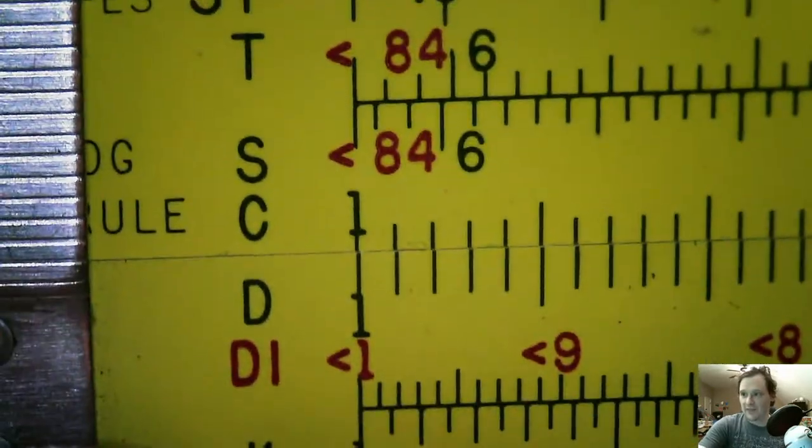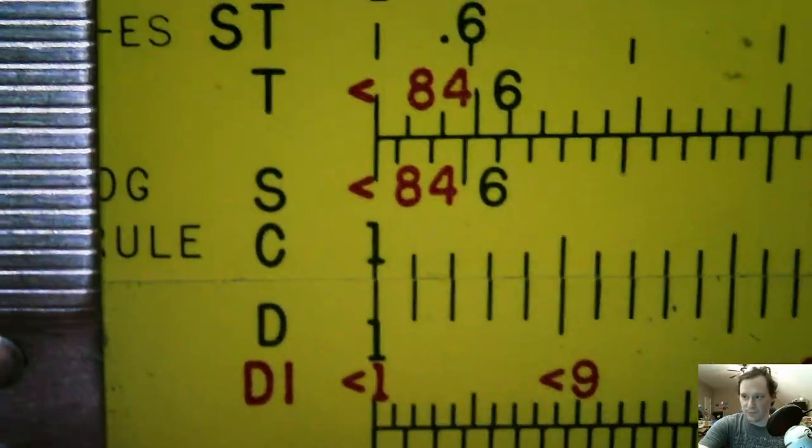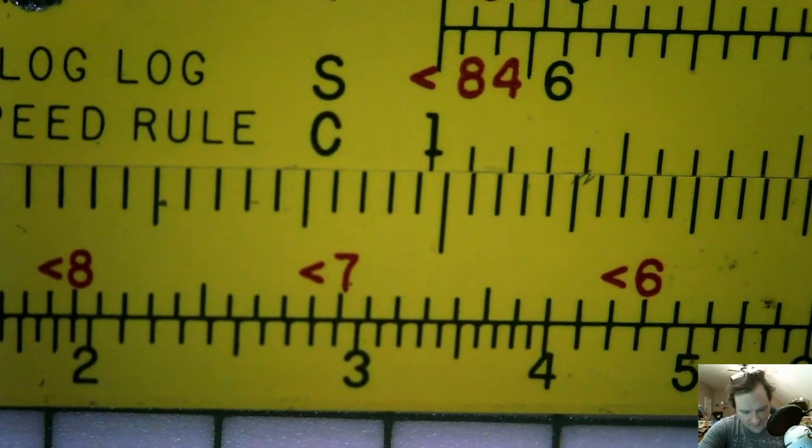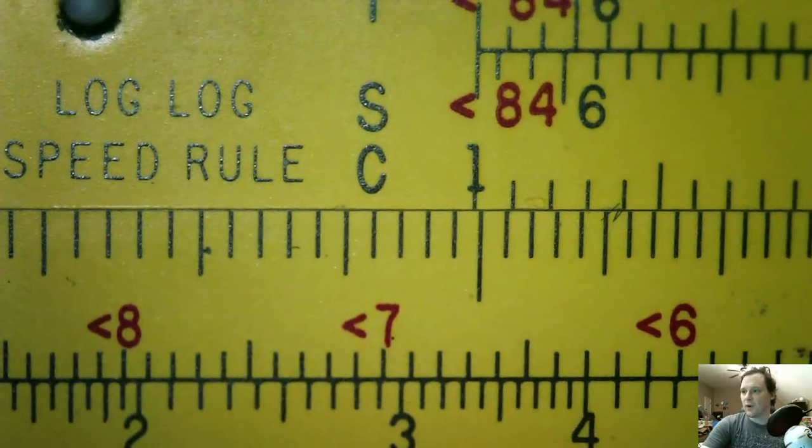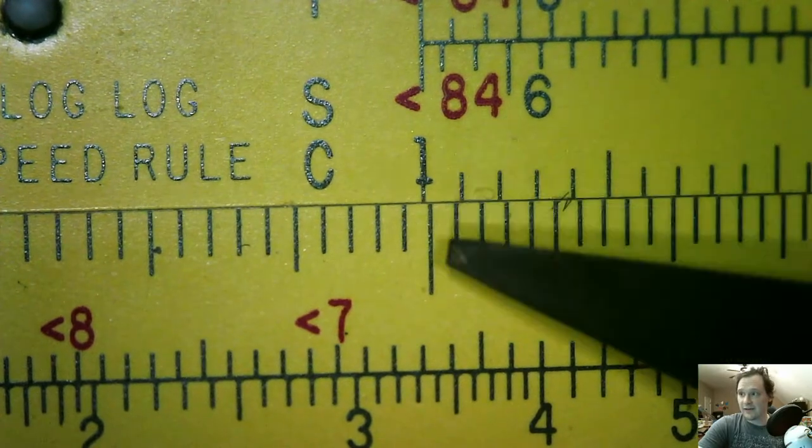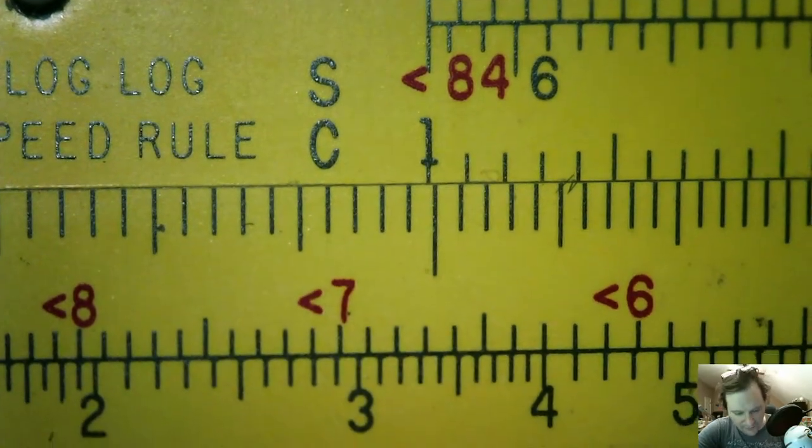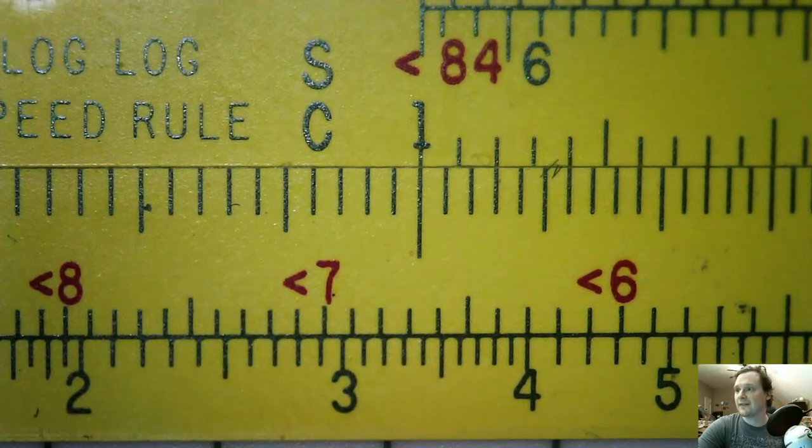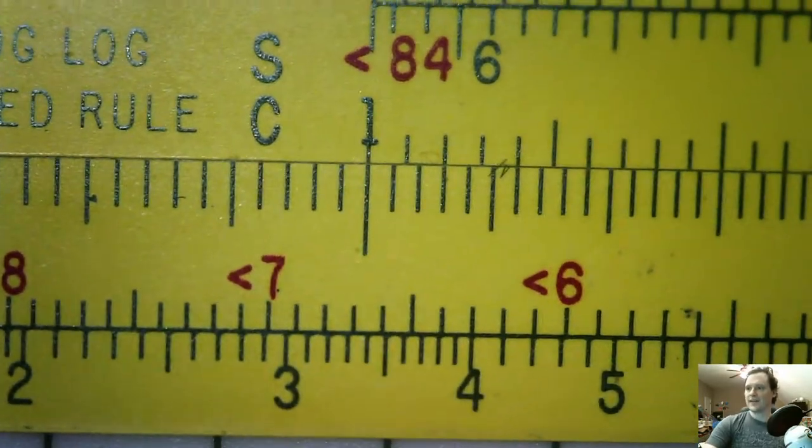So one moment, the slide rule is going to get blurry for just a little bit. I'm going to move this right about there. Alright. You can see where I've moved 1 on the C scale to nearly 1.5 on the D scale. Let's bump this over just a little bit. There we go. It's perfect.